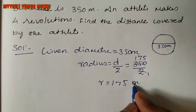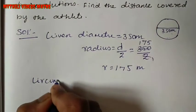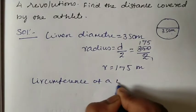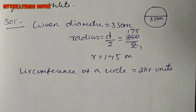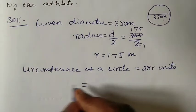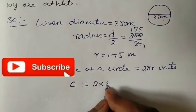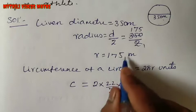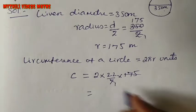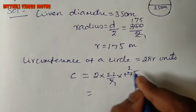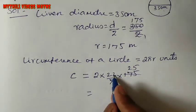So now we have found the radius. Next, we find the circumference of the circle. The formula for circumference of a circle is 2πr units. Substitute: circumference C is equal to 2 into pi value 22 by 7, into r value 175. Cancel: 7 cancels.